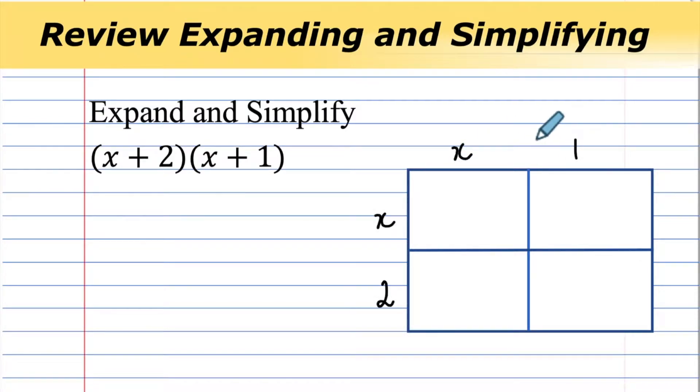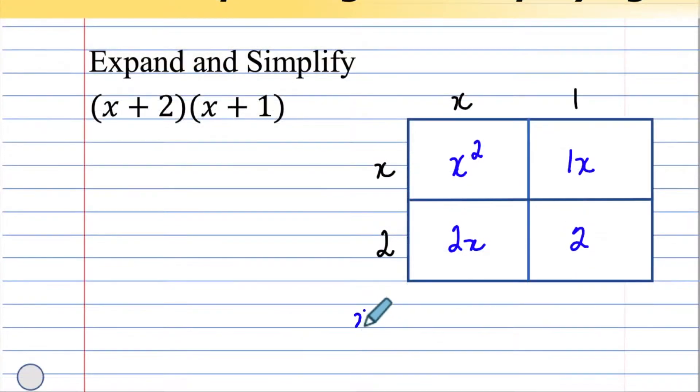Recall that we can use the area model to perform this multiplication. x times x is x squared, x times 1 is 1x, 2 times x is 2x, and 2 times 1 is 2. x plus 2 times x plus 1 results in x squared plus 1x plus 2x plus 2. Collecting our like terms, we have 3x in the middle with the x squared and the 2 as the first term and the last term.